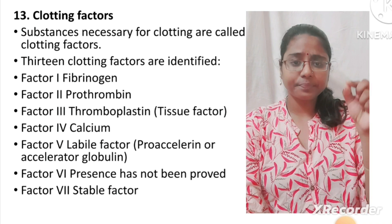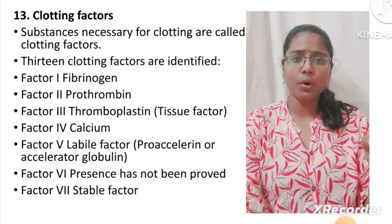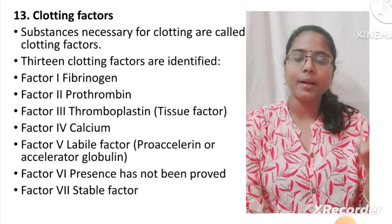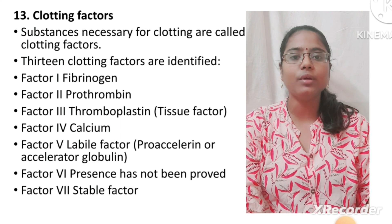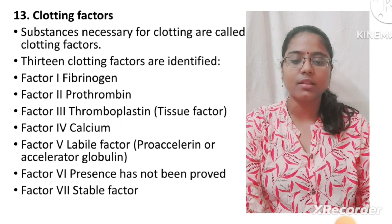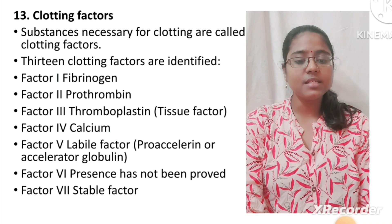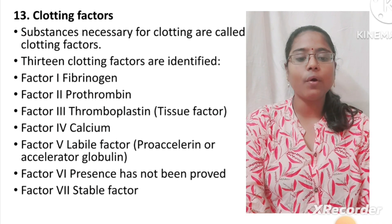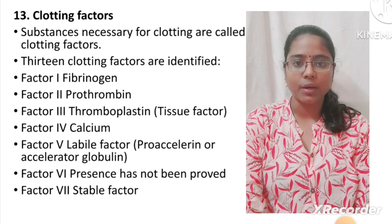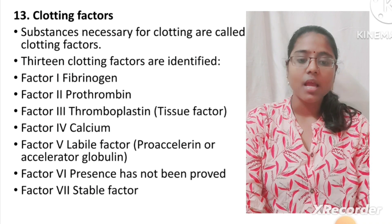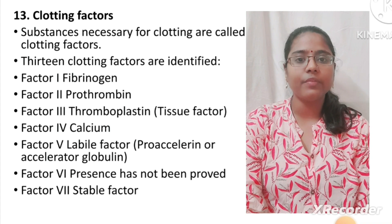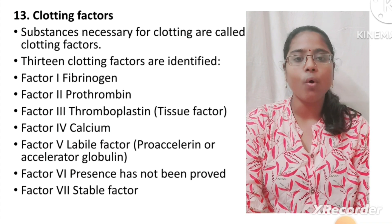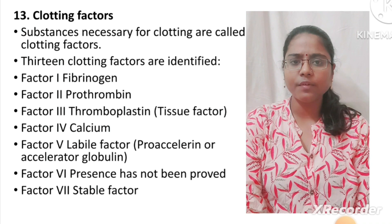So if we talk about blood clot, we call these 13 chemicals clotting factors. The substances necessary for blood clotting are called clotting factors. There are 13 clotting factors in total. There are all the main factors, starting with factor 1 and factor 2, and we call them clotting factors.